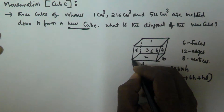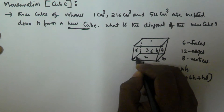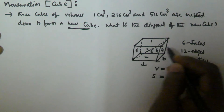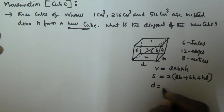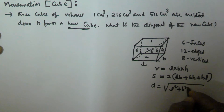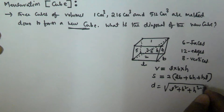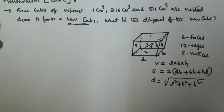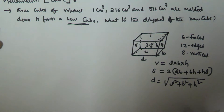The diagonal of a cuboid goes from one corner to the opposite corner. The diagonal D is given by the square root of (L² + B² + H²). These are the three important formulas related to the cuboid.